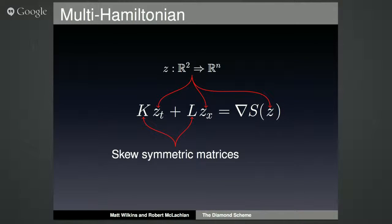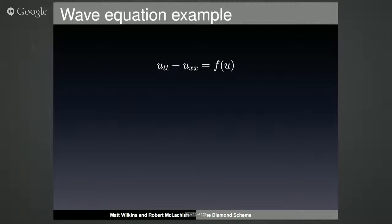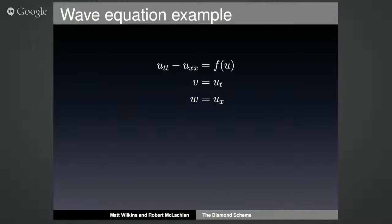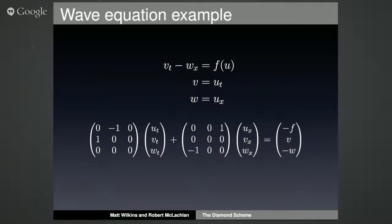K and L are actually skew-symmetric matrices. I'll give you an example of how to get an equation — the wave equation — into that form. We start with the wave equation, add two dummy variables V and W, substitute those back in for U_t and U_x, giving three first-order equations. Bundle them into a matrix equation: K is the first matrix, L the second — both skew-symmetric — and we're in multi-Hamiltonian form.